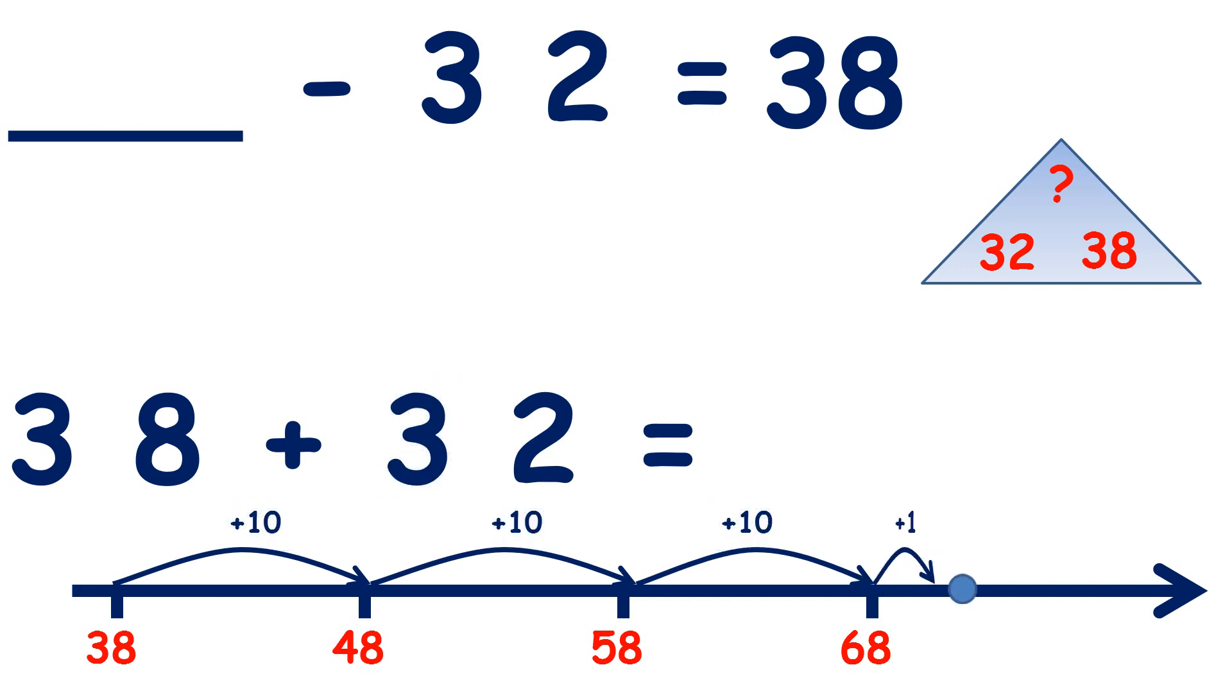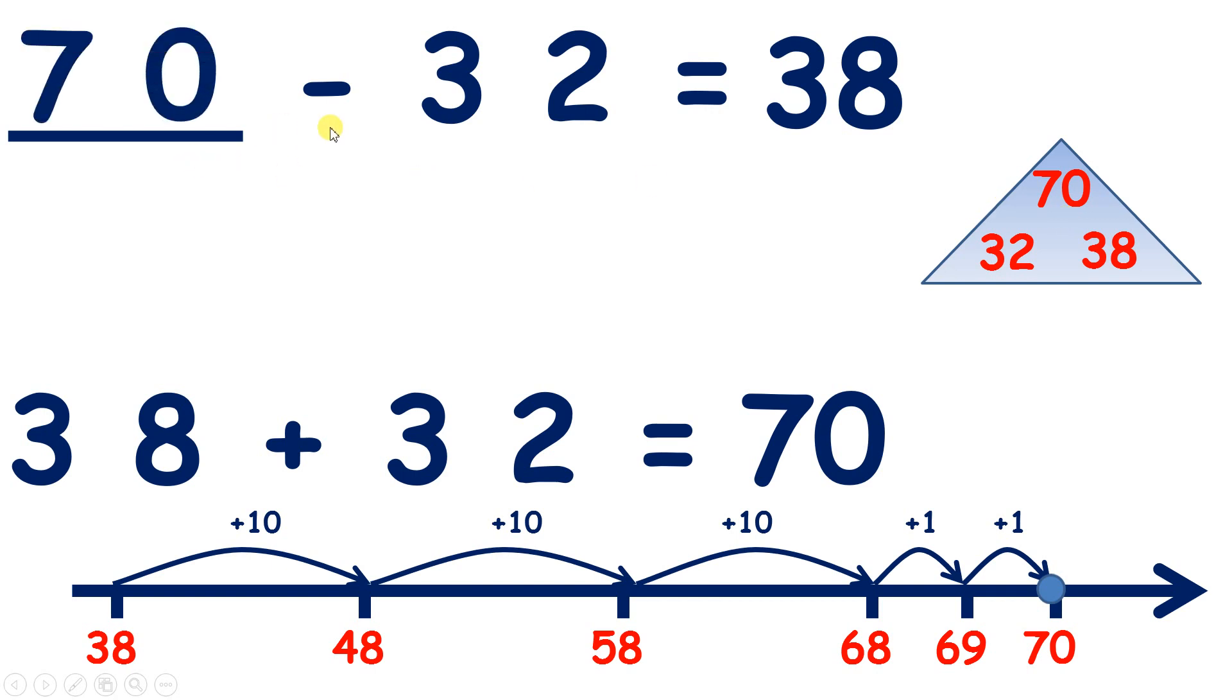Now we can add 1, 2 units to 68. So we've added our two units. And we have our answer 70. So 70 is the top number of our number family triangle. So 70 minus 32 is 38.